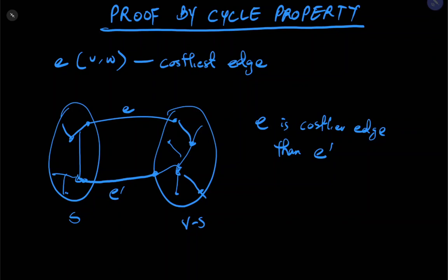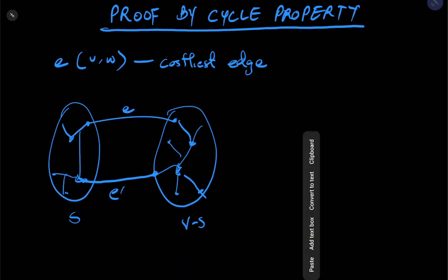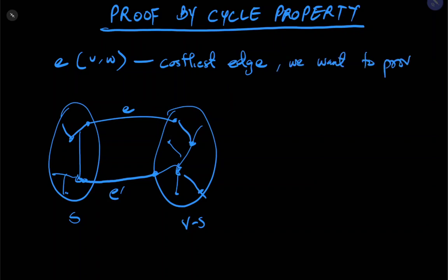To state this properly, let's state this properly. We are going to say we want to prove that E, which is the costliest edge, cannot be part of the MST. So what we're trying to prove is that E cannot be part of the MST.